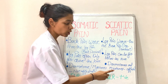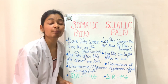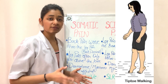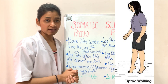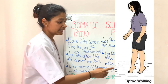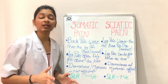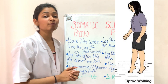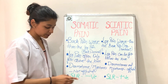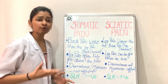For a myotome example, suppose you are checking the S1 nerve root, which supplies the plantar flexors. If you ask the patient to perform toe walking and there is weakness in the plantar flexors, the patient will not be able to perform it — this can be a sign that myotomes are affected. In somatic pain, however, if you ask the patient to perform toe walking, they can do so easily with no weakness.